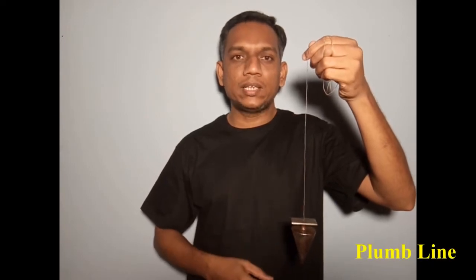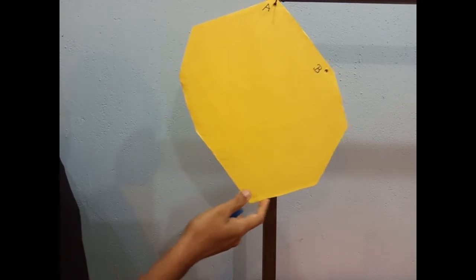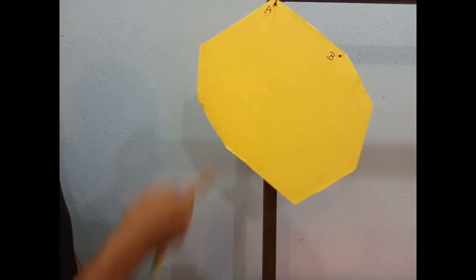In this experiment, I'm going to use this plumb line to draw a vertical line as accurately as possible. Here, this card can swing freely from this nail.